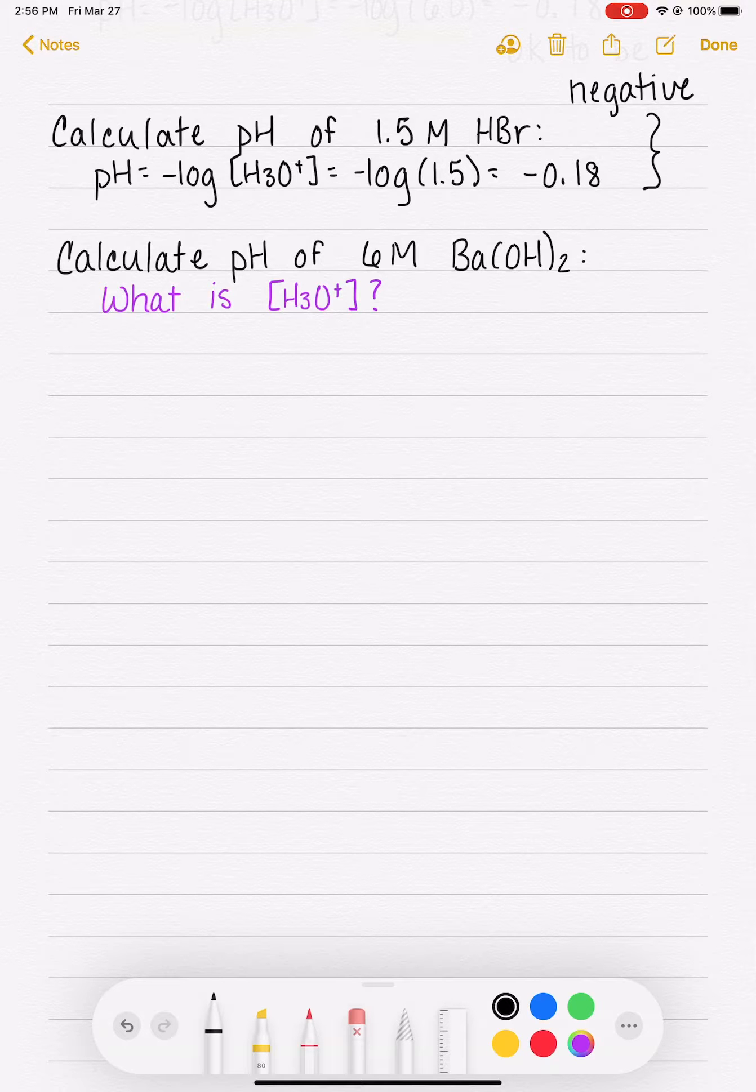It's not quite as straightforward. Let's make an ICE table. Barium hydroxide is one of our strong bases, and that means by definition when we put it in water, it completely dissociates. When it dissociates, it produces the Ba²⁺ ion and two hydroxide ions.